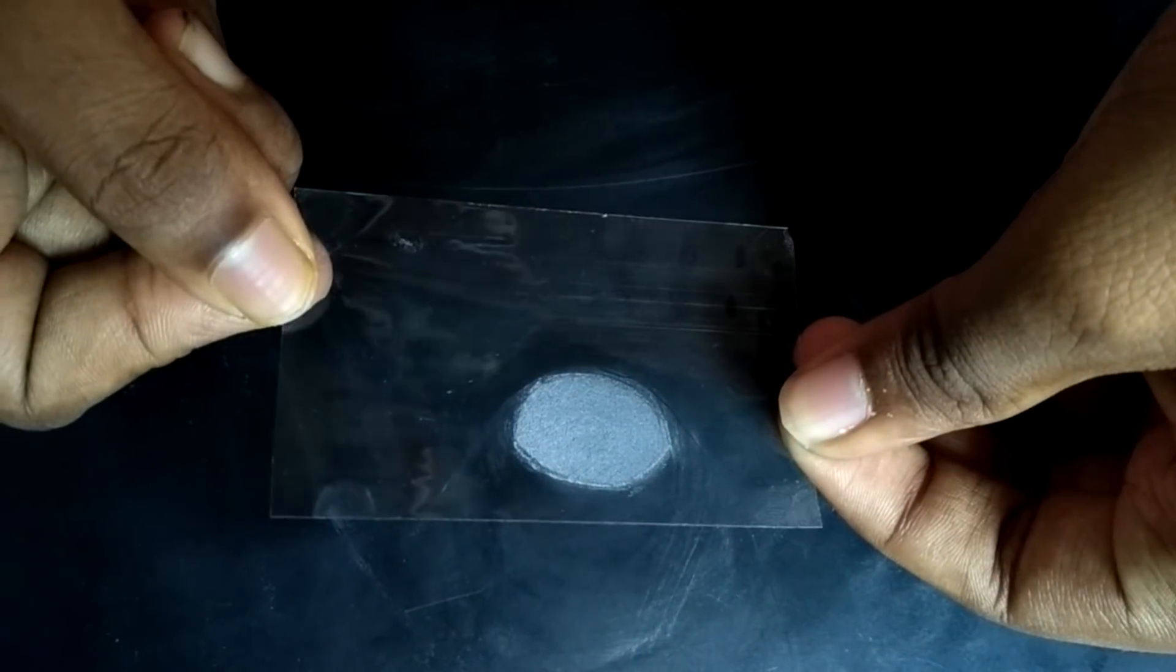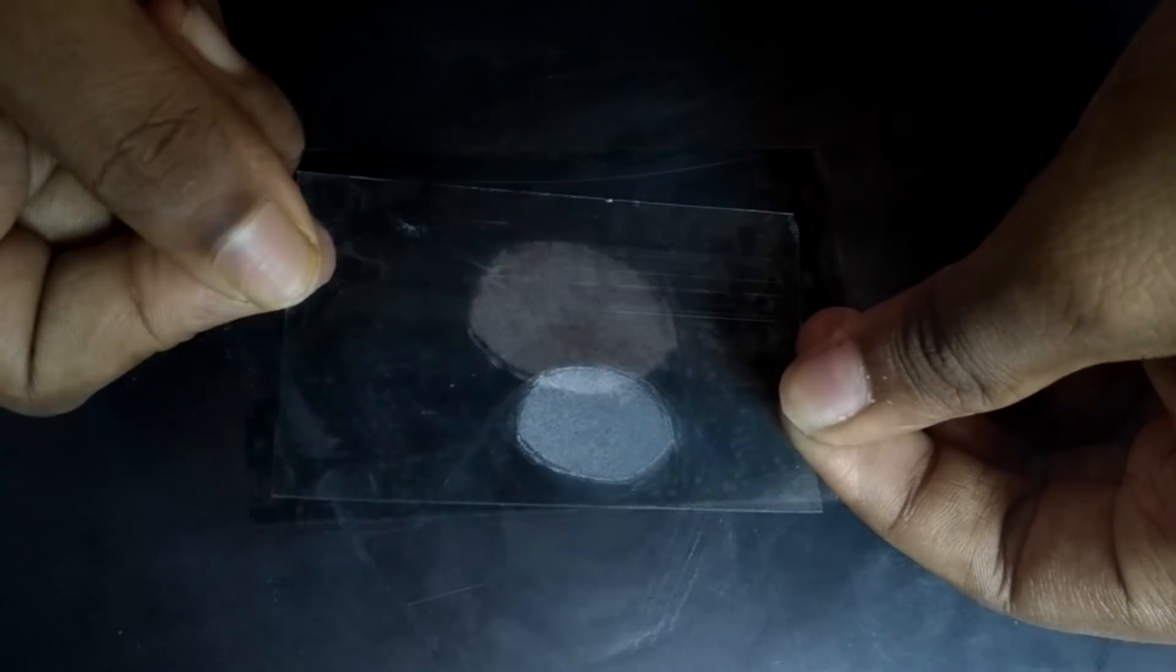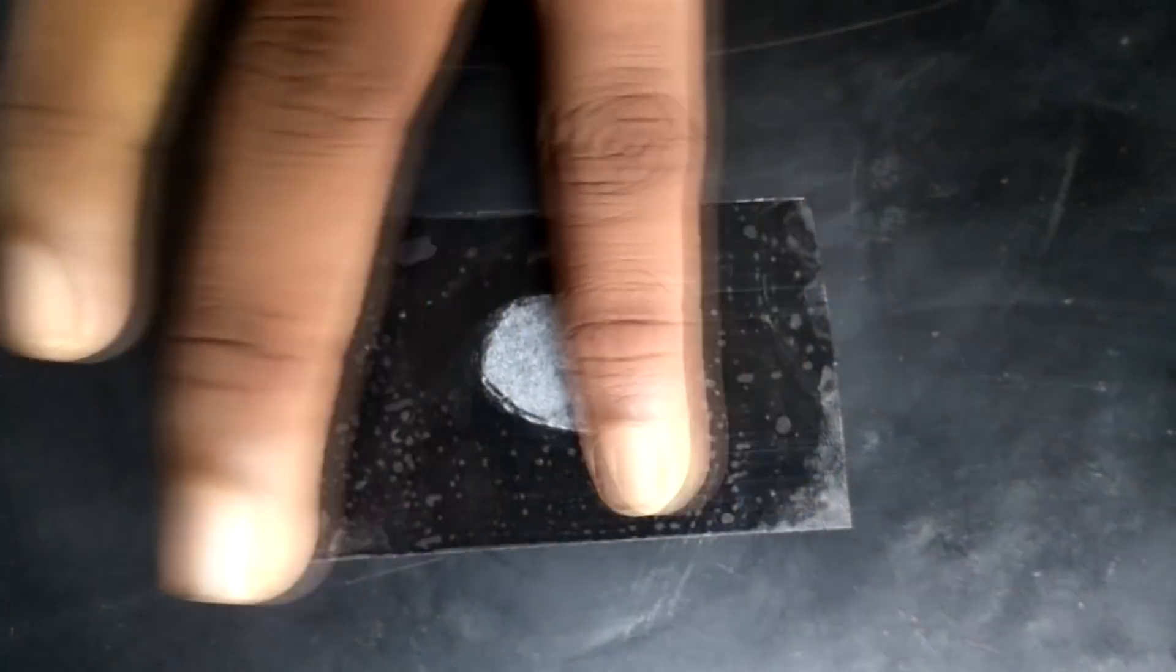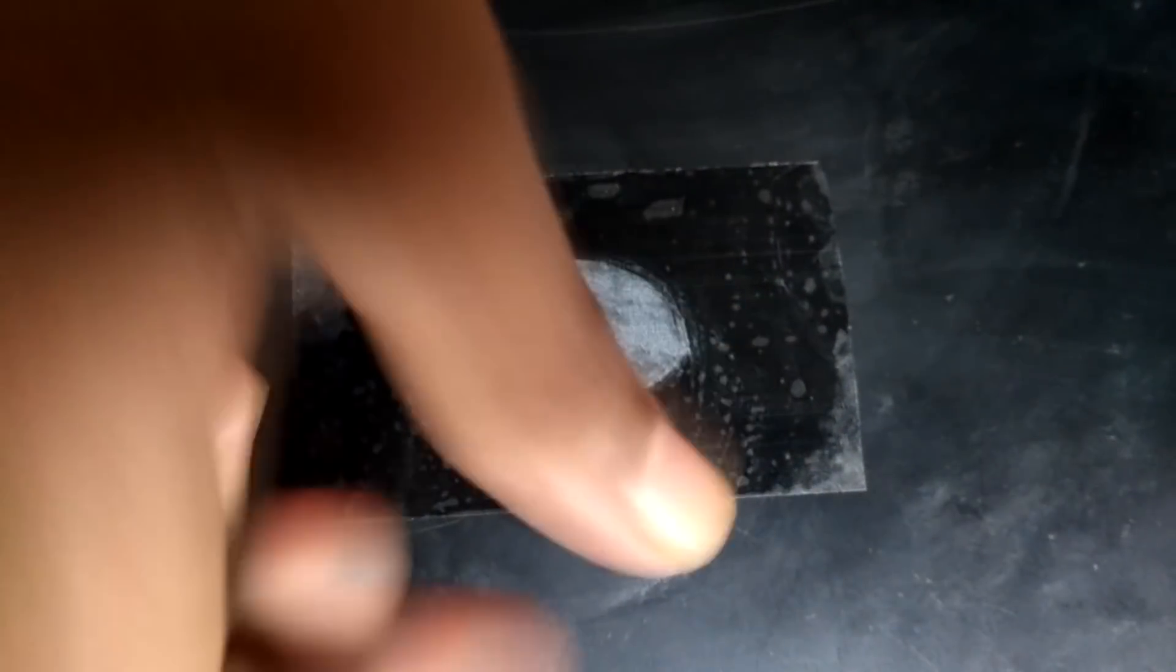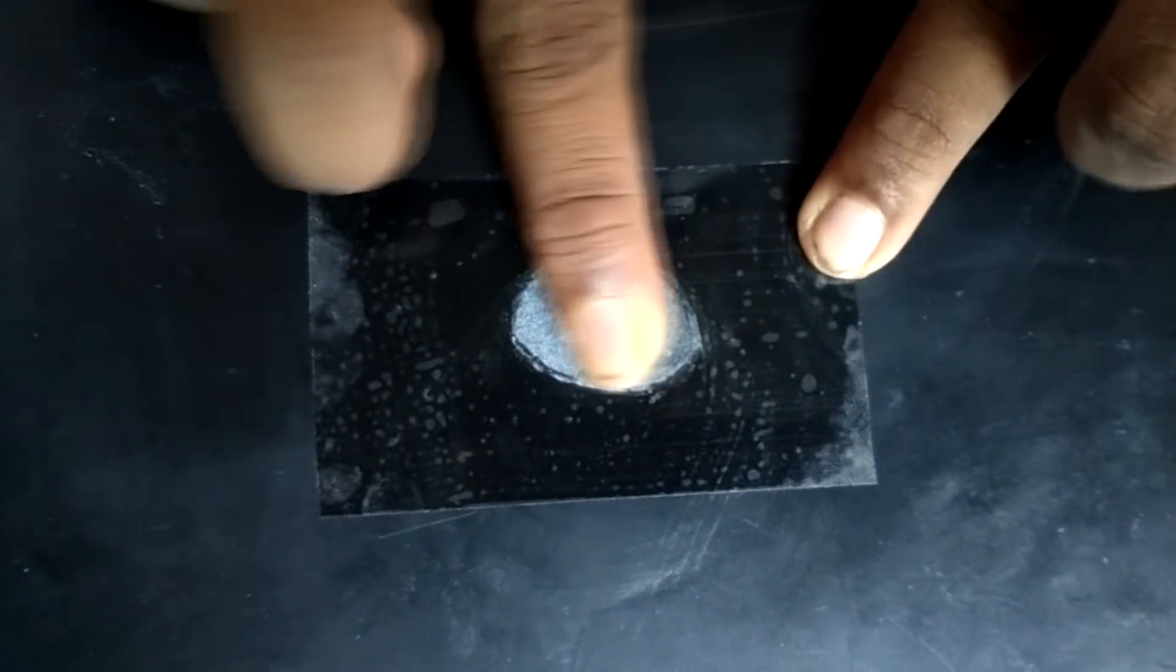Now we need a clean piece of cello tape like this. Sit it carefully over the fingerprint like this. Now press the part of cello tape where there is fingerprint so that the fingerprint transfers onto the cello tape.